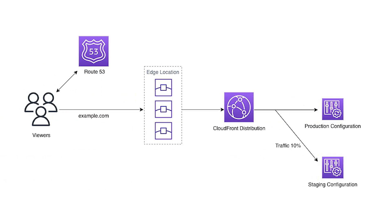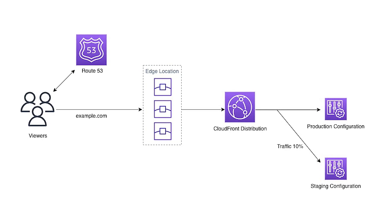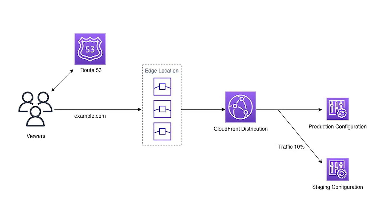This means you can now create a new version of your distribution and precisely control the share of traffic being routed to each version, without having to inject custom headers or override client DNS settings. With this feature, you can easily test the impact of switching to a new content origin or implementing new geographic restrictions. It's great to see AWS continue to improve CloudFront, and I'm excited to see the creative ways users integrate this new feature into their CI/CD pipelines.